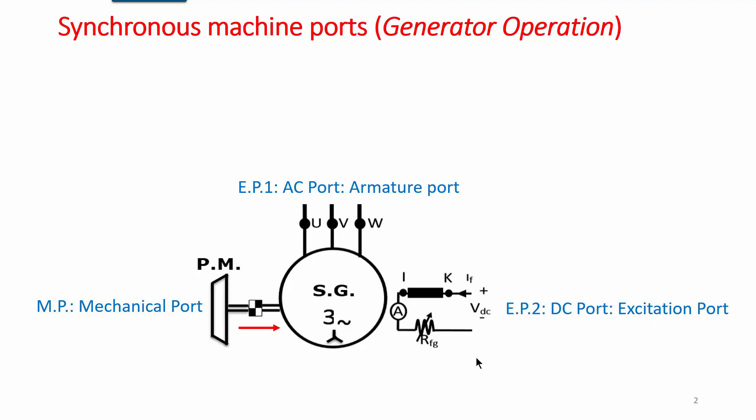Power at the mechanical port is equal to torque times angular speed of the shaft. Since synchronous machines are operated in a constant frequency network, applied mechanical power can be changed by using torque. Electric power on the DC port can be given as IF squared times RF — that is, the copper loss in field coils in the rotor. The main electrical port is the armature or stator port, and active power can be given as 3 times voltage, current, and power factor.